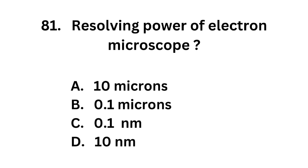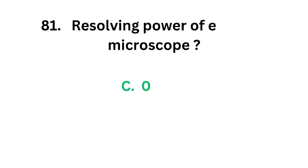Question number 81. Resolving power of electron microscope: Option A: 10 microns. Option B: 0.1 microns. Option C: 0.1 nanometer. Option D: 10 nanometer. The correct answer is option C, 0.1 nanometer. The resolving power of an electron microscope is 0.1 nanometer.